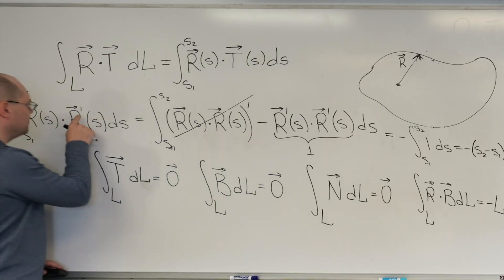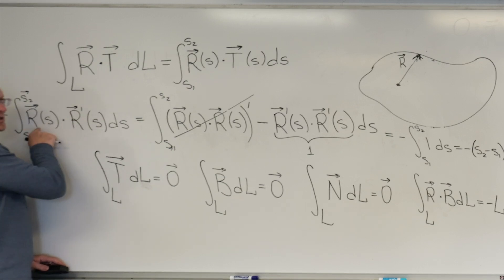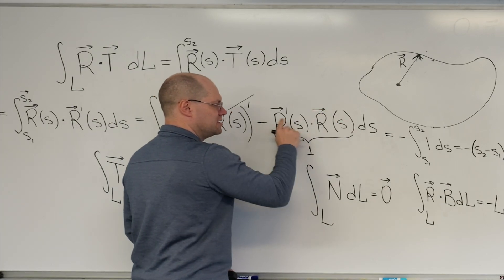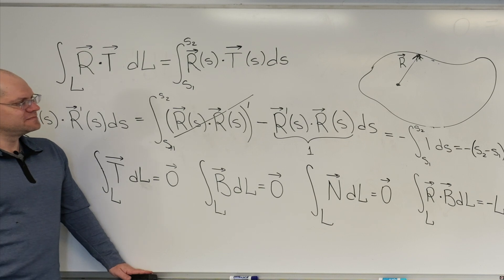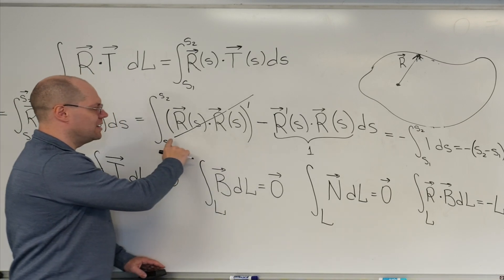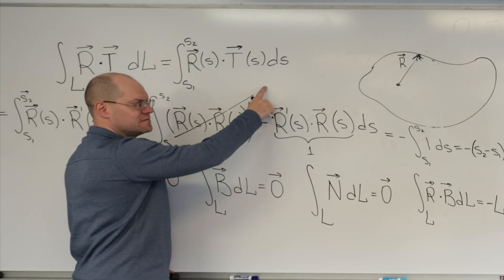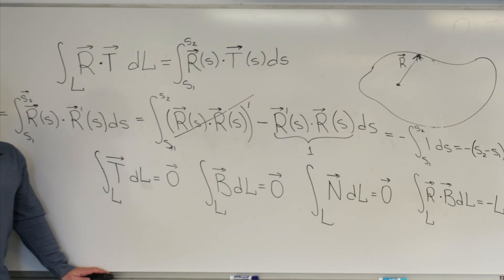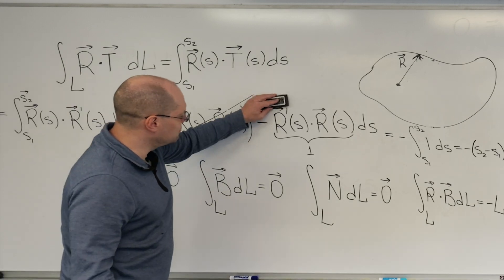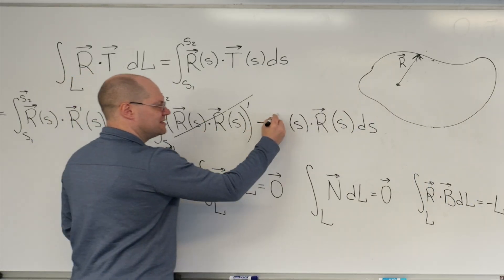And then here, the prime goes from this term onto this one. We move the derivative from this term onto this one. And so, once again, for a closed surface, this drops out. Right? Do you guys see where this is going? But now this is T.